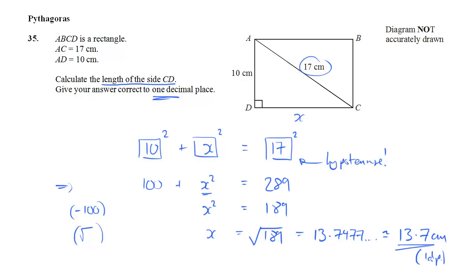Remember, of course, to do a bit of a common sense check, check that it all makes sense. 13 and a bit centimeters, it fits, doesn't it, because it's less than 17, which is what it should be with the hypotenuse but it's about the same size as the other short side.